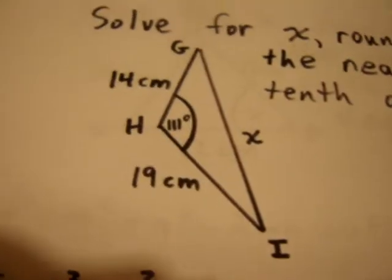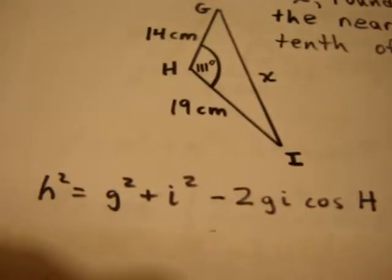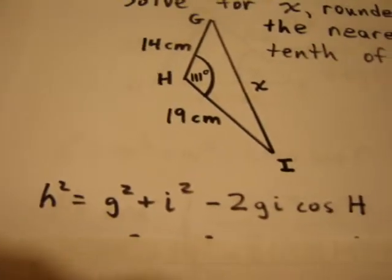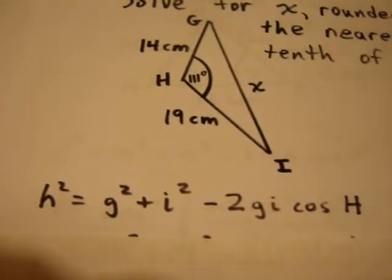So, coming over to our question, I can write H squared equals G squared plus I squared minus 2GI cos H.